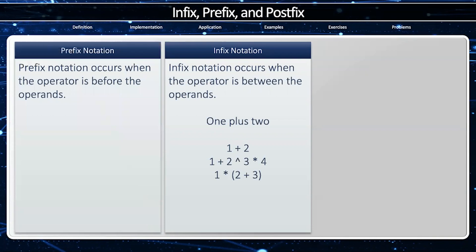Prefix notation is the operator happens before the operands. For an example, add one and two, or plus one two, or plus two times to the power of two to the three to the four, or times one plus two three. It doesn't seem very intuitive, does it?